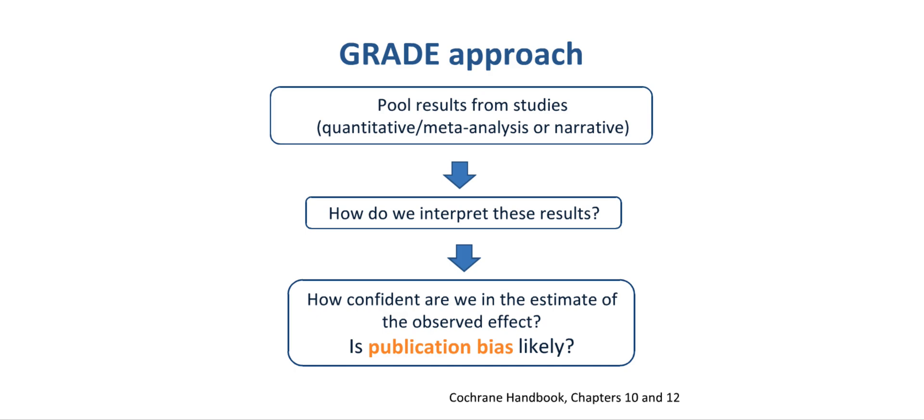In the GRADE Approach, studies are summarized in systematic reviews. They may provide a quantitative summary through a meta-analysis, or they may be described by a narrative summary. The important question is how one can interpret the results of such a summary. In particular, how confident we can be that the estimate of the observed effect from the summary is actually true. How confident can we be in this estimate?